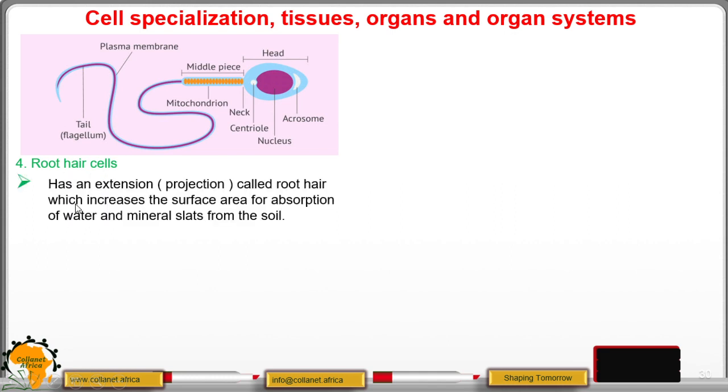We have the root hair cell, which has an extension or projection called the root hair. The root hair increases the surface area for absorption of water and mineral salts from the soil.